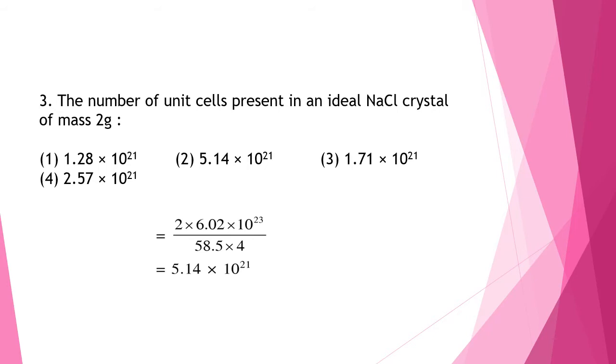But the question is the number of unit cells. So each unit cell has 4 NaCl atoms. So we divide it again by 4. So the answer to this will come 5.14 into 10 to the power 21. That is option 2.